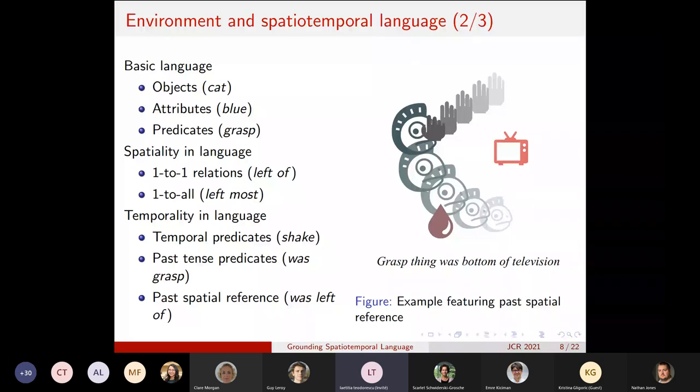So these are the basic language and they do not entail any spatial or temporal concepts in the language. Then we have also the spatial aspect in our language. So we have decided to restrict ourselves to referring to objects as their relations specified by their relations in space to other objects. So we have one-to-one relations.